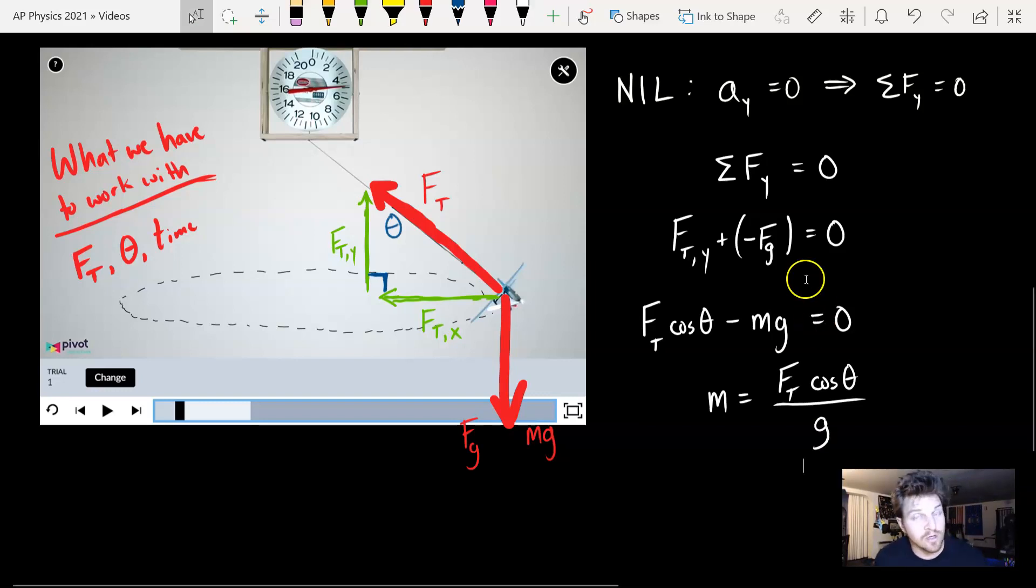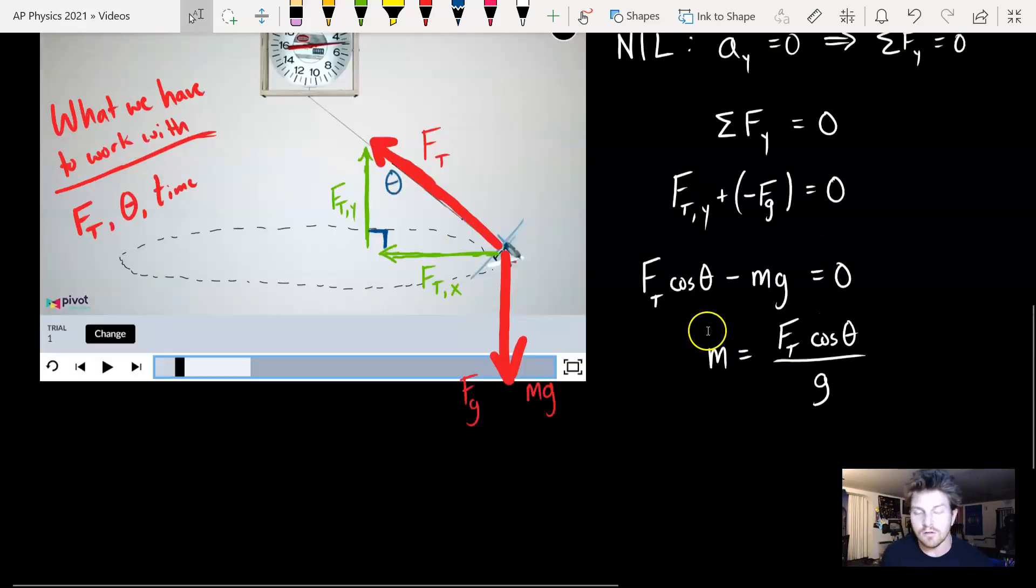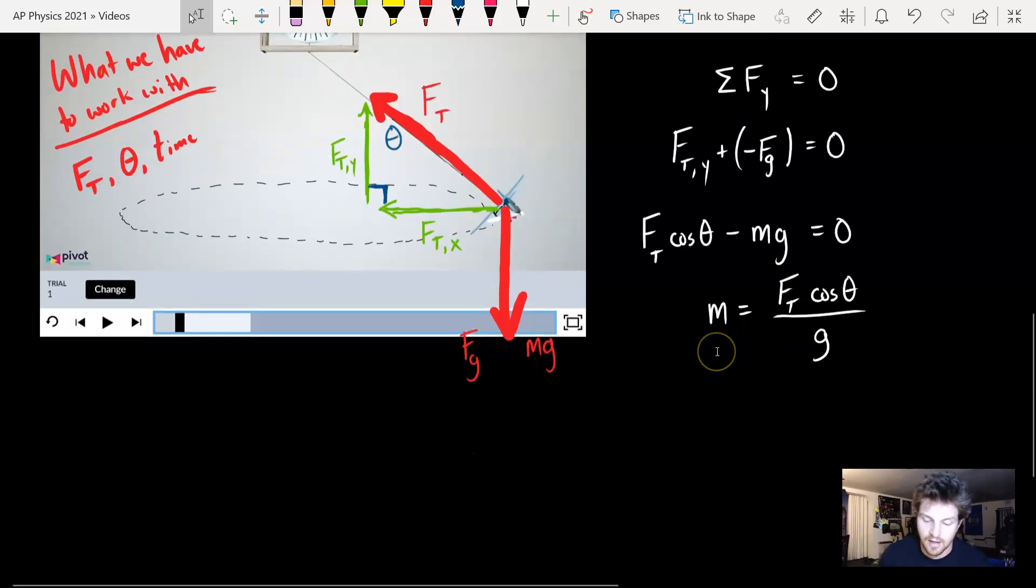Now it's in terms of everything that I can solve for. I can get force of tension from the scale, I can get the angle from the protractor, I know that G is 9.8. This is all in terms of things that I can get, and I can now plug those values in for each different trial and solve for what the masses. Now one other thing to remember too is when you solve this, when you're using forces and solving for mass, mass is in kilograms.